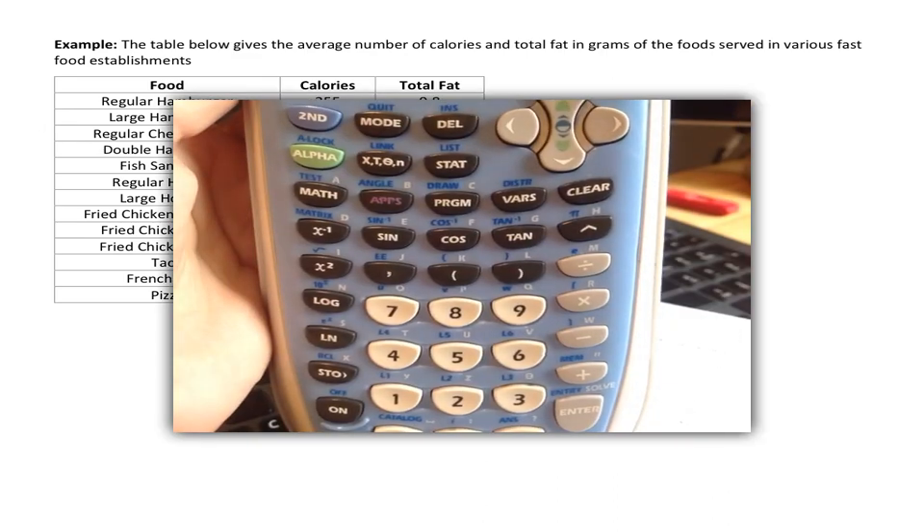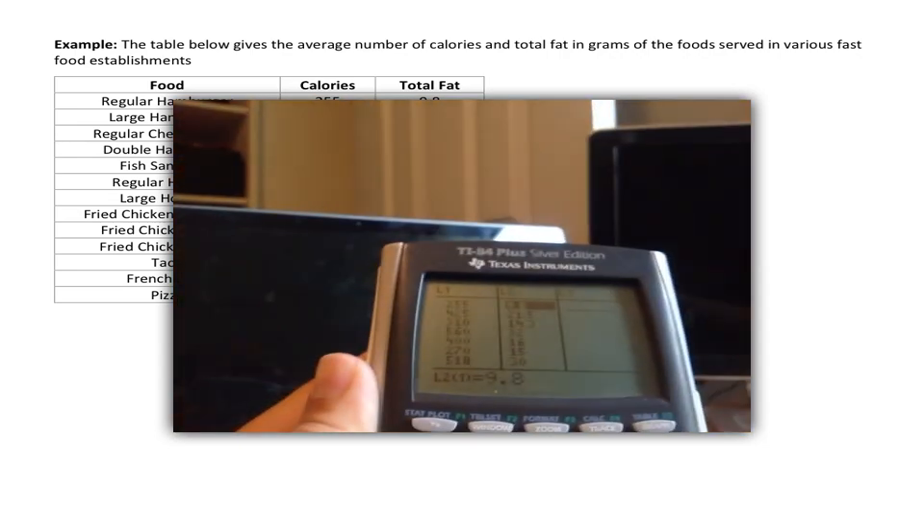Finally, I know you've all been waiting for this. Here's an example. Here's a table. It gives the average number of calories and total fat grams of the food served in various fast food establishments. So using your instructions that you've already written down, you're going to press Stat, and then you're going to choose the first option, Edit. And then you're going to put all of the X values in List 1 and all of the Y values in List 2. So the first thing I would have you do is, using your calculator, create the scatter plot and sketch the scatter plot. So remember, you're going to do a second stat plot and turn it on, and then you can do ZoomStat and take a look at your plot. That's what it should look like.